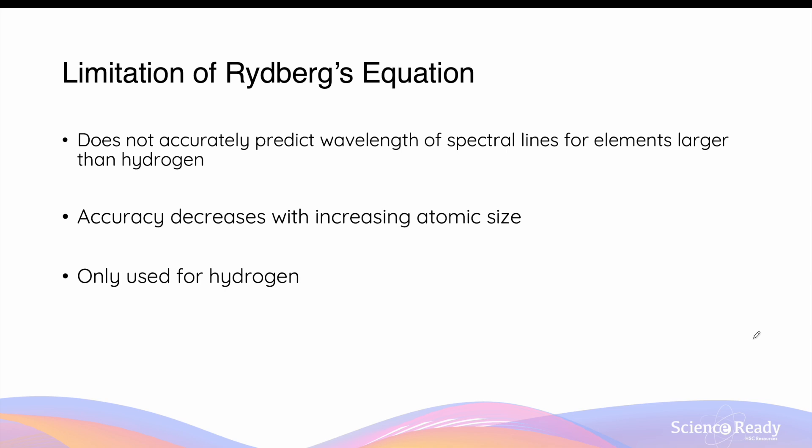Rydberg's equation has some limitations. It does not accurately predict the wavelength of spectral lines for elements larger than hydrogen. The accuracy of Rydberg's equation decreases with increasing atomic size. In other words, as the element gets larger, the prediction made by Rydberg's equation becomes more and more different to the actual value. Therefore, Rydberg's equation should only be used for the emission spectrum of hydrogen.